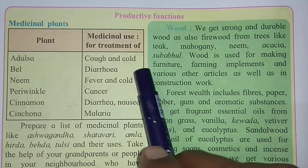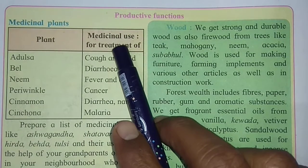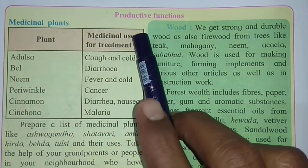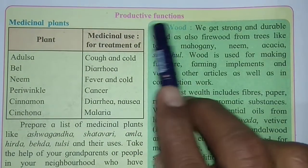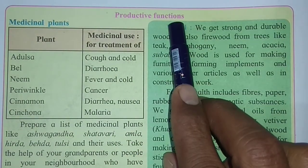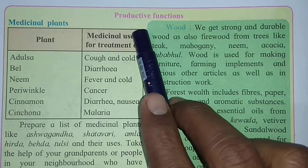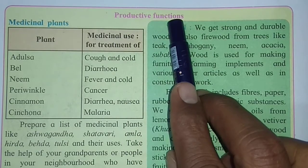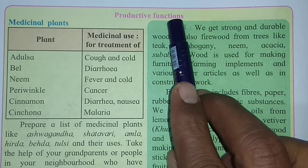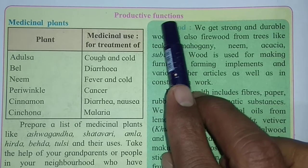Moving to the next page, the main point given is productive functions. We have learned about protective functions; now we are going to see productive functions — what products we get from forests and how they are useful to us.